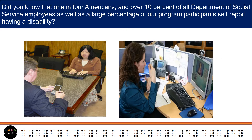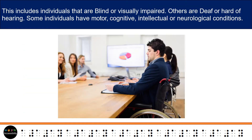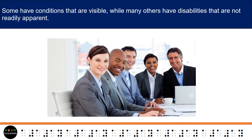Did you know that 1 in 4 Americans, and over 10% of all Department of Social Service employees as well as a large percentage of our program participants self-report having a disability? This includes individuals that are blind or visually impaired, others who are deaf or hard of hearing, and some individuals with motor, cognitive, intellectual, or neurological conditions. Some have conditions that are visible, while many others have disabilities that are not readily apparent.